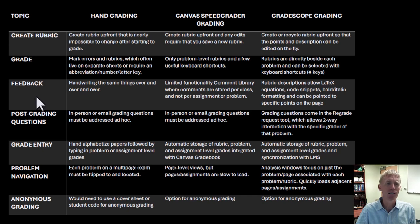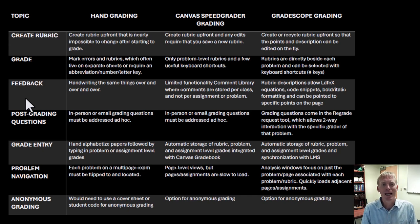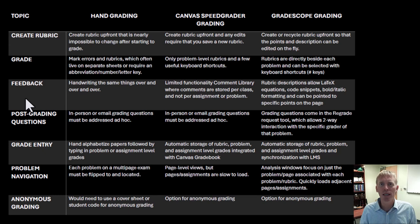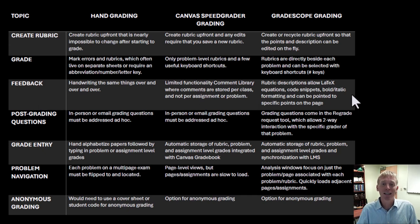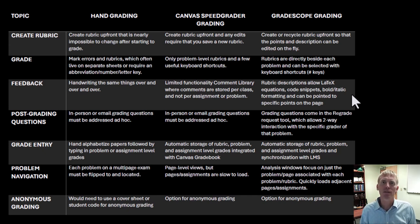Next, feedback. Giving feedback to students is one of the vital pieces of doing the grading — it's not just the point value, but what they could have done better. Handwriting the same thing over and over for hand grading gets really laborious. Canvas SpeedGrader has some limited functionality of a comment library, but all your comments for all your different assignments live in one place and are hard to navigate. With Gradescope, you can have rubrics as LaTeX equations and code snippets, format them, and add extra comments — essentially two levels of feedback.